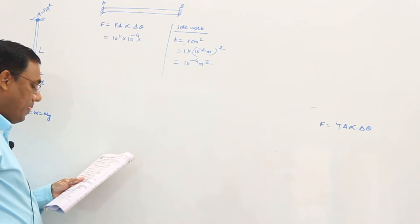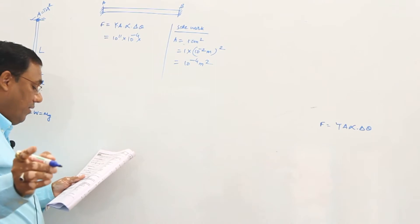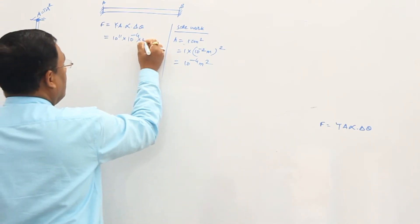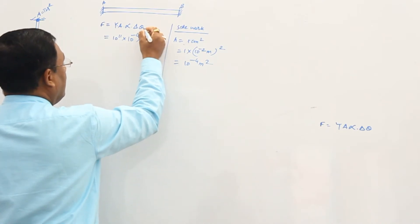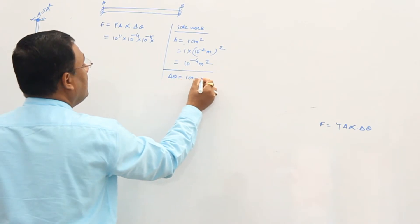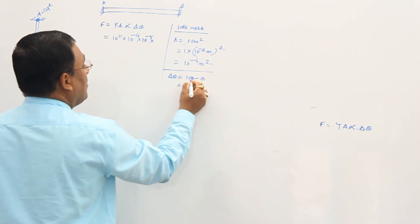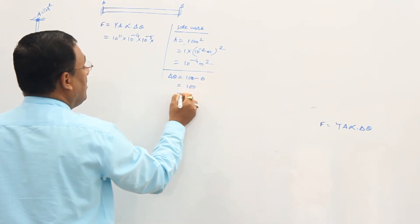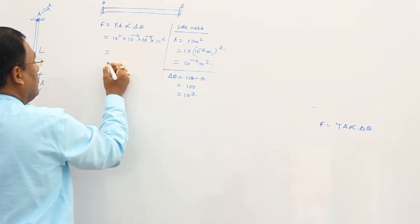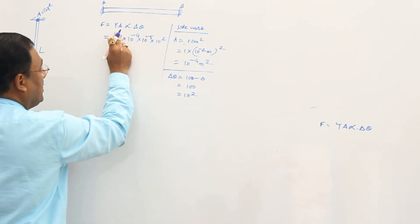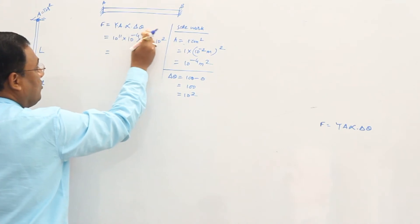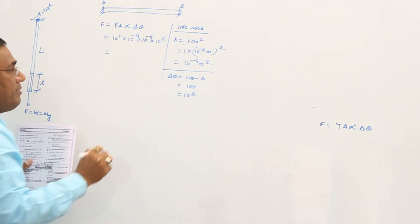10 to the power minus 4. And alpha is given as how much? Tell me, alpha. Alpha is 10 to the power minus 5. And delta theta, change in temperature - see, delta theta means final temperature minus initial, so 100 minus 0, which is 100. 100 means 10 to the power 2. Clear? So what is this? Tell me. First add the positive ones: 11 plus 2 means 13. And minus 4 minus 5 means minus 9. 13 minus 9...